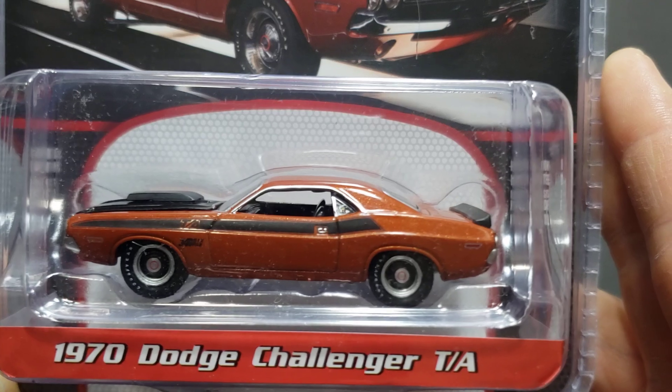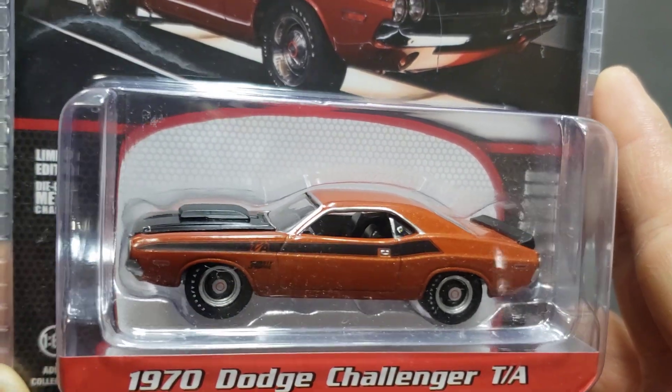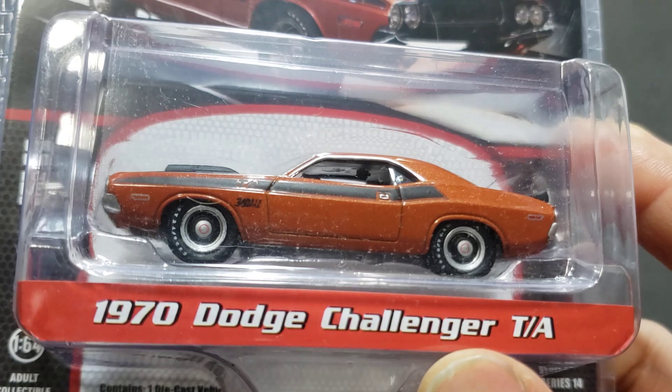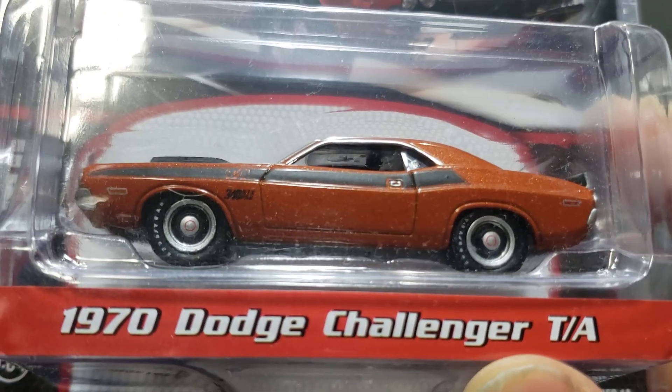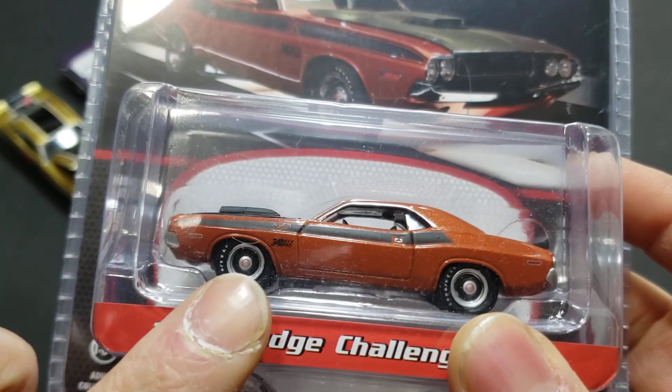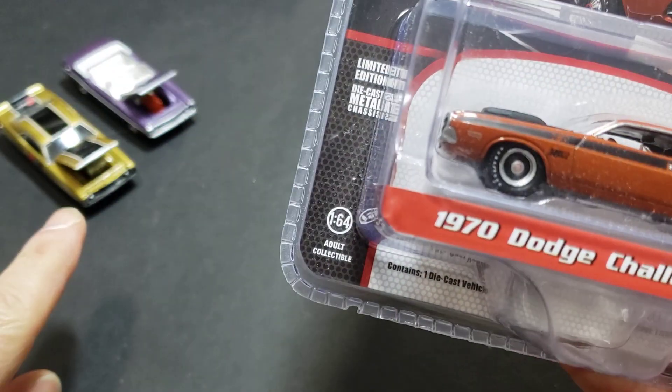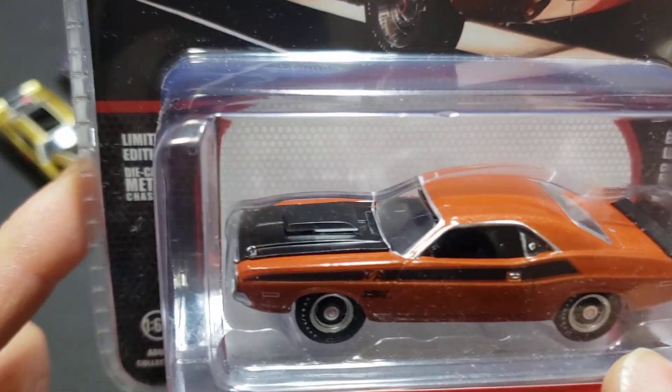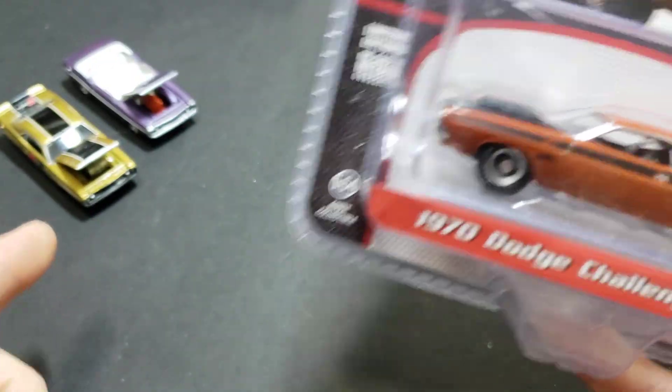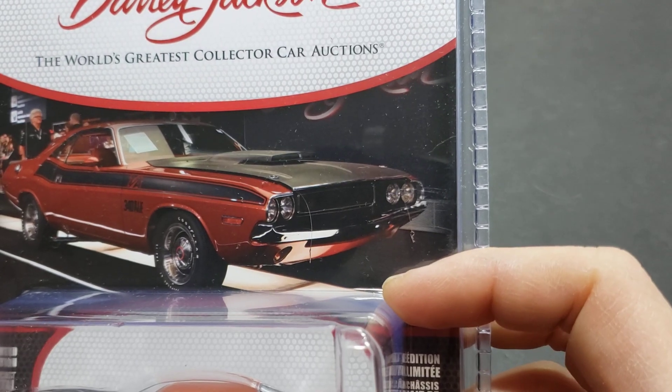Nice looking car and this one is a TA, so Trans-American version of the car. And I do believe you can see there, in case you're wondering what the engine will be in this one, we're hoping it says there it's the 340 six pack. And as you can see there it is the same semi-functional hood, separate piece hood as the RT over there.